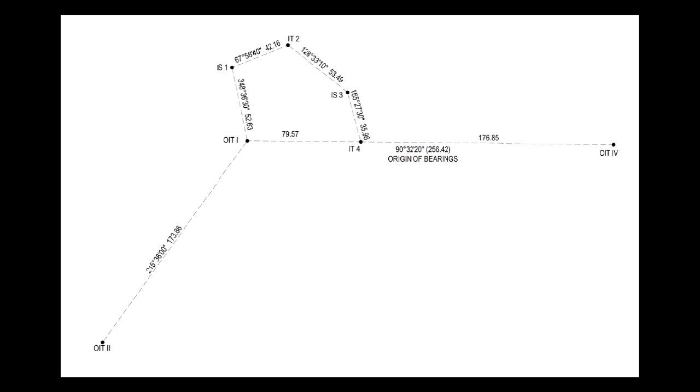Here we have a traverse from a previous video. These are the final closing coordinates and we've shown that it all closes. What we're going to do is change one of the bearings and one of the distances on separate occasions in this traverse and see what effect it has on the close and how we might go about isolating the errors. It's probably a good idea to have a copy of this plan in front of you — you could take a screenshot or send me an email and I'll forward it to you.